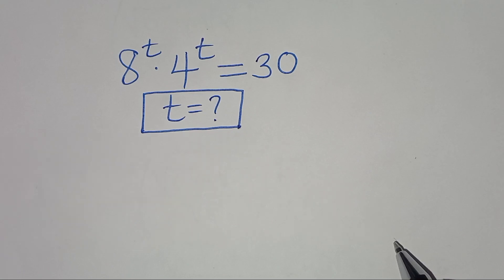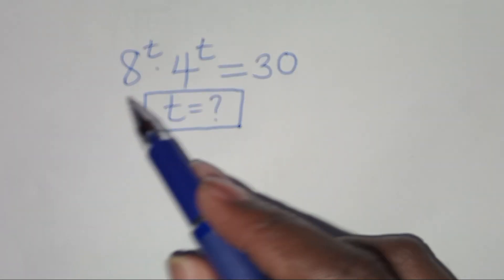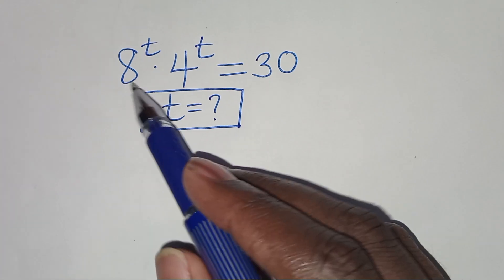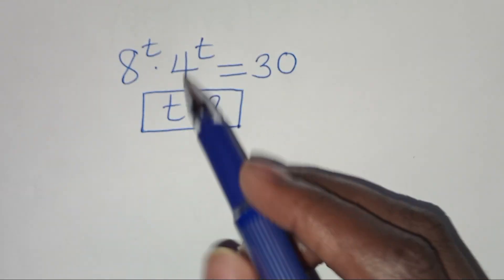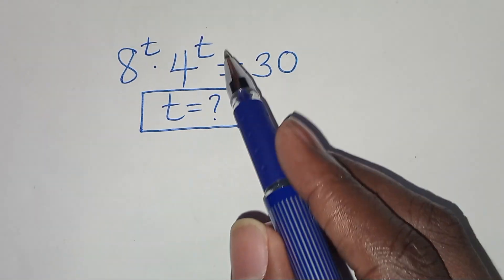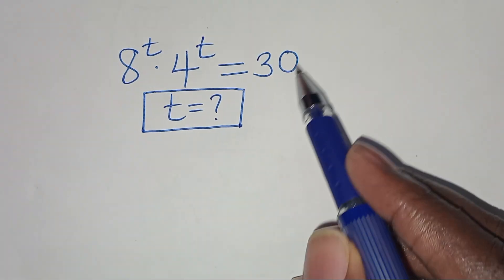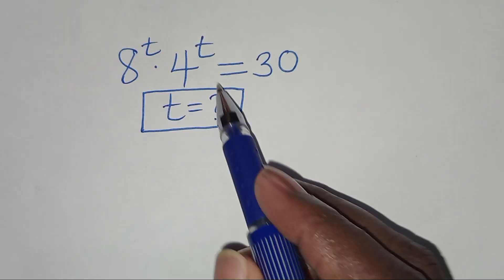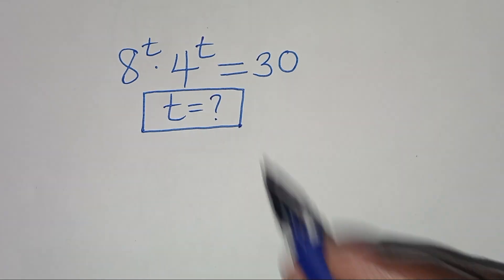Hello everyone, you are welcome to solve this nice exponential equation, which is 8 to the power of t times 4 to the power of t, and this is equal to 30. What is the value of t?